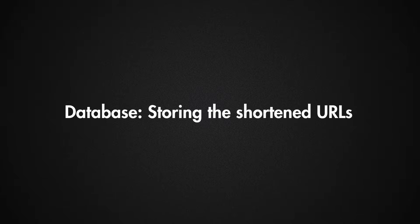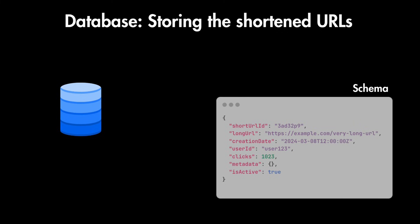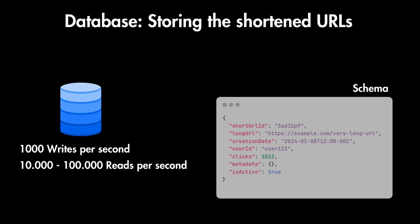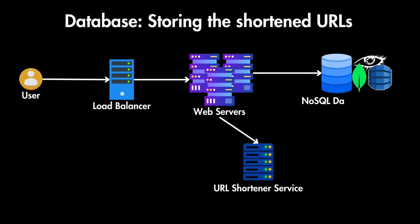Next let's talk about the database for storing shortened URLs. This layer stores the mapping between short and long URLs and should be optimized for fast read and write operations. The schema is simple: a primary key for the short URL ID, the long URL, and optional metadata like user ID. With 1000 writes per second we can expect at least 10,000 to 100,000 reads per second. We need a high-performance NoSQL database — for example a document store like MongoDB, a wide-column store like Cassandra, or a key-value store like DynamoDB. These are designed for large-scale operations and we don't need ACID compliance since we won't be doing complex joins or atomic transactions.